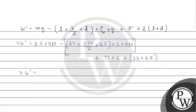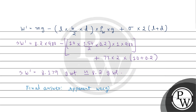Solving this, we get W dash equals approximately 8.179 gram weight, which is approximately equal to 8.2 gram weight. So the final answer: the apparent weight of the glass plate is 8.2 gram weight. Hope you understood it well. Best of luck, thank you.